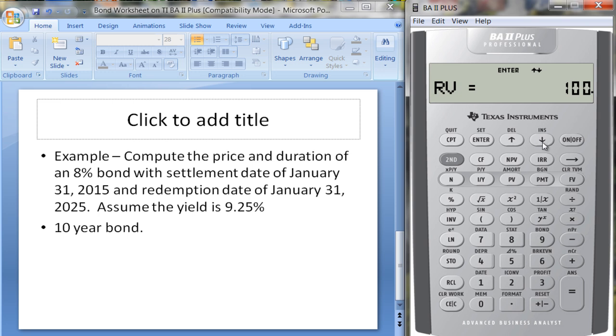The redemption date we said was January 31st of 2025, so 1.3125 enter. 100% redemption value—you're going to get back the full $1,000 when the bond matures.